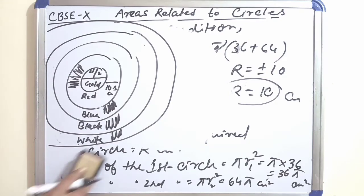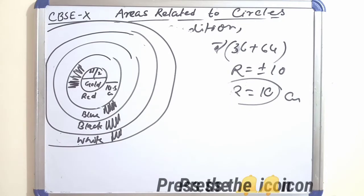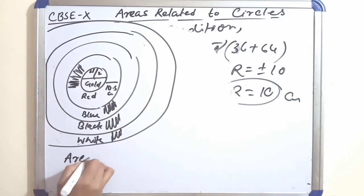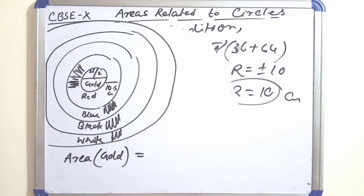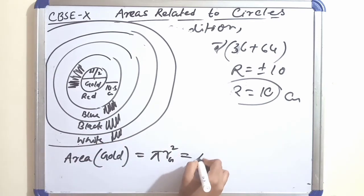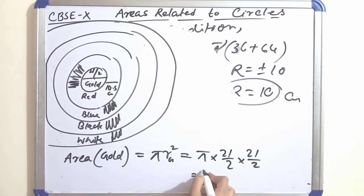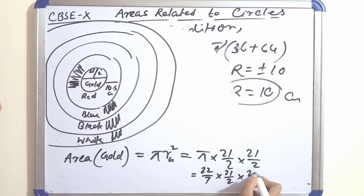First, area of the gold region = πr² = π × (21/2)². Using π = 22/7: (22/7) × (21/2) × (21/2). Calculating this gives 346.5 cm².